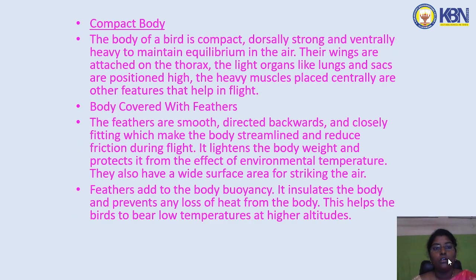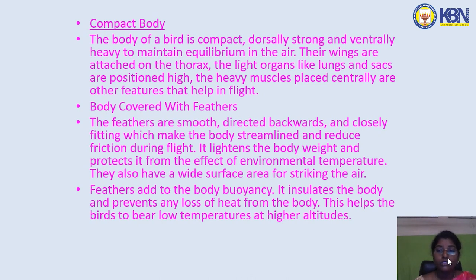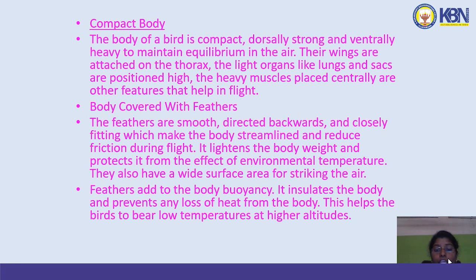The body of a bird is compact, dorsally strong, and ventrally heavy to maintain equilibrium in the air. The wings are attached to the thorax. Light organs like lungs and air sacs are positioned high, and heavy muscles are placed centrally to help in flight. The feathers are smooth, directed backwards, and closely fitting, making the body streamlined and reducing friction during flight.